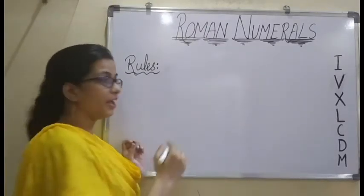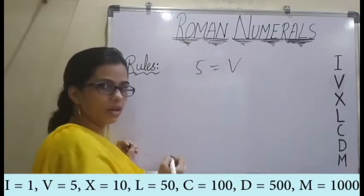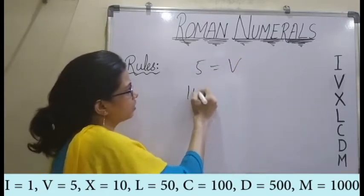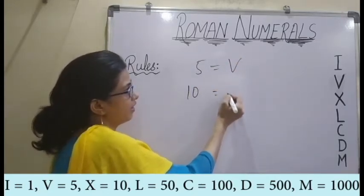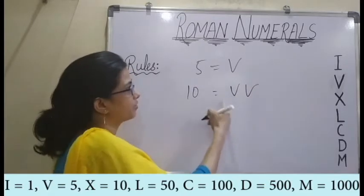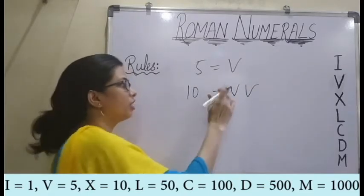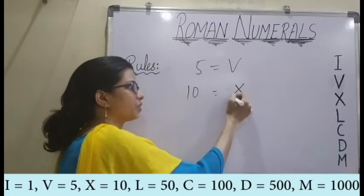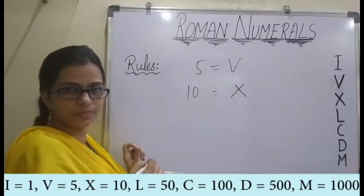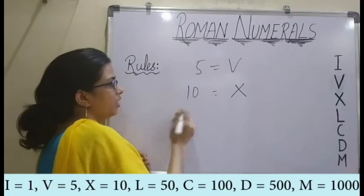Suppose for 5 we have V. So for 10, can I write VV? No, we can't. Because for 10, we already have a symbol which is X. So we can't write VV for 10.